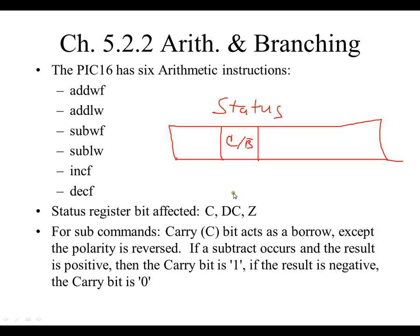What that means is: if a subtract occurs and the result is positive, then the carry bit is one — meaning there is no borrow. However, if the result is negative, that means you had to borrow from something to get that negative result, which is why the carry — or borrow — bit is zero. If this is confusing, you may just want to write it down. You pretty much just have to memorize this, so if you don't understand it, write it somewhere you can always refer to.